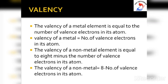Sodium has 1 valence electron and its valency is also 1. Now consider chlorine — its atomic number is 17, so it has 7 valence electrons in its outermost shell. Its valency is not 7. Chlorine requires one more electron to complete its 8-electron structure, so the valency of chlorine is 1. In general, the valency of a non-metal element is equal to 8 minus the number of valence electrons in its atom.